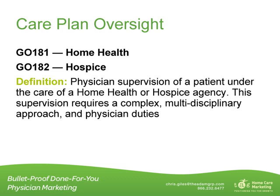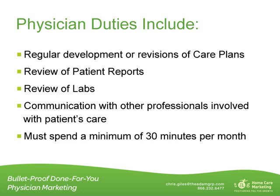The last component of care plan oversight applies to both hospice and home health agencies — this is the 30 minutes of documented work on the patient's plan of care each month. The home health code is G0181 and the hospice code is G0182. Care plan oversight is defined as physician supervision of a patient under the care of a home health or hospice agency. This supervision requires a complex multidisciplinary approach, and physician duties include regular development or revision of care plans, review of patient reports, review of labs, and communication with other professionals involved in the patient's care, including phone calls. Patients must spend a minimum of 30 minutes per month per patient providing these duties.